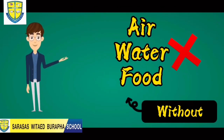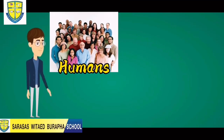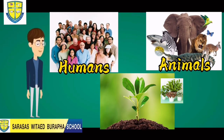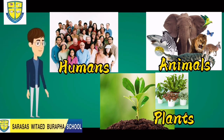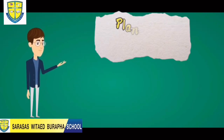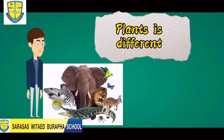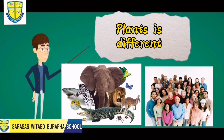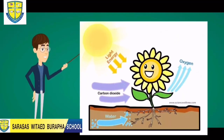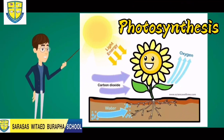Without these three things — humans, animals, and plants — will all die. Plants are different from animals and humans because plants use air, water, and sunlight to make their own food.